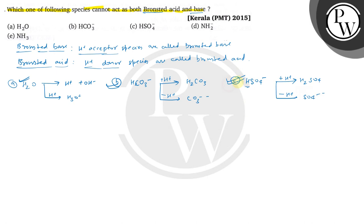Option C, bisulfate ion, can act as both Bronsted acid and base.